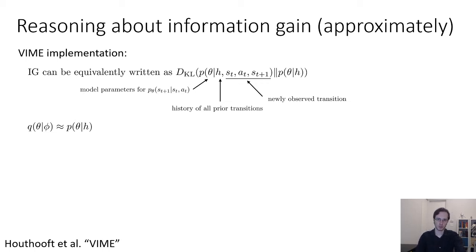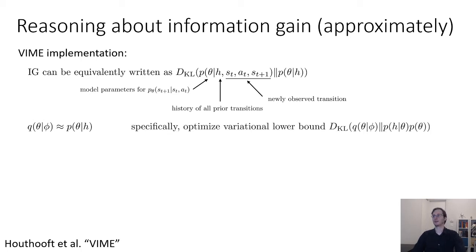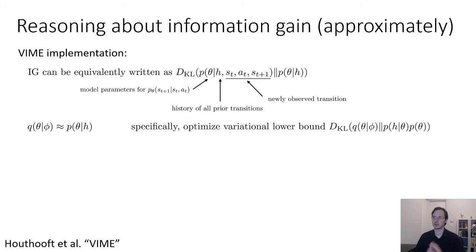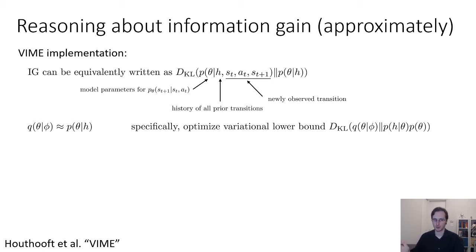We have our approximate posterior q(θ | φ), which is approximately equal to p(θ | h). We train this approximate posterior to optimize the variational lower bound, which is given by the KL divergence between q(θ | φ) and p(h | θ) · p(θ). If you're not familiar with variational lower bounds, we'll cover them in more detail in a subsequent lecture. The short version is that you train q(θ | φ) to be close to p(θ | h), which by Bayes' rule is the same as making it close to p(h, θ) = p(h | θ) · p(θ).